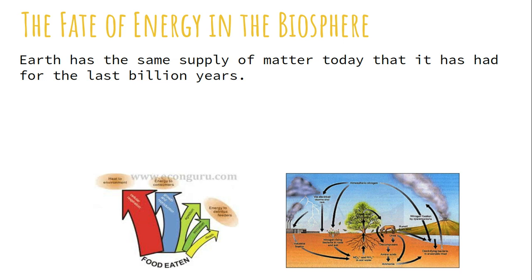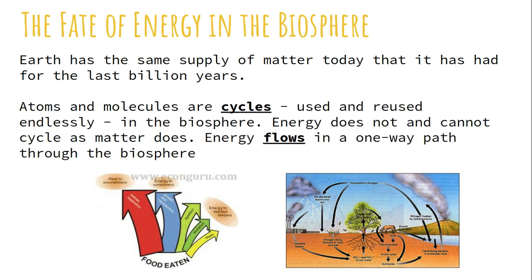When it comes to our biosphere, the earth has the same supply of matter today that it had for the last billion years, because we cycle things and reuse them endlessly. Things die, go back to the soil, plants use the soil, they grow up, we eat them, we die, and we put it back into the soil. It's all about this connection of cycles.